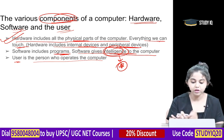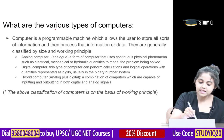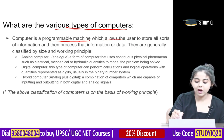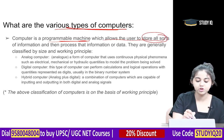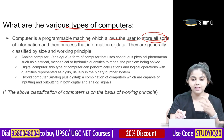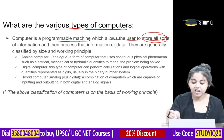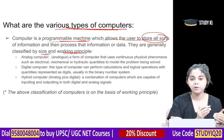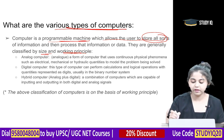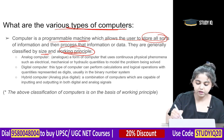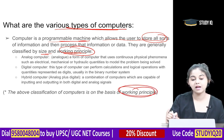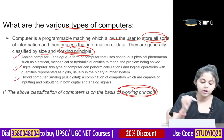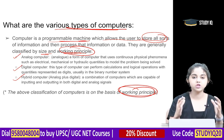Various types of computers are available. A computer is a programmable machine that allows the user to store information and process that data as output or result. Computers are generally classified by size and working principles. On the basis of working principle, computers are classified as analog, digital, or hybrid computers.